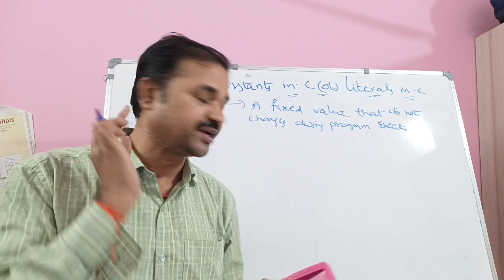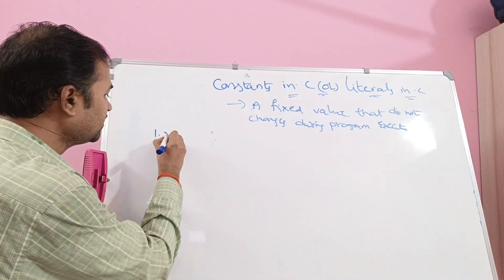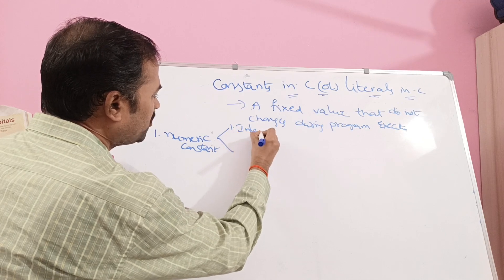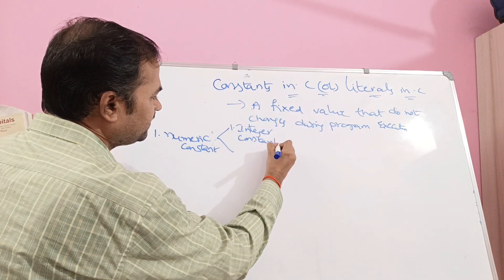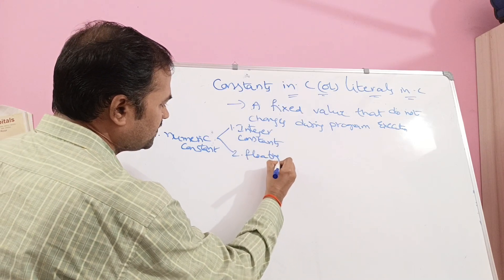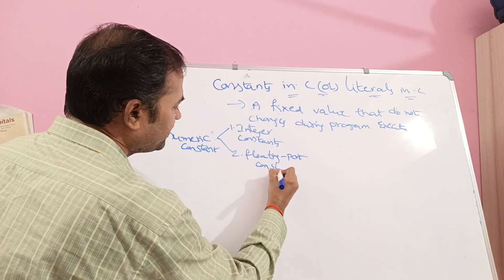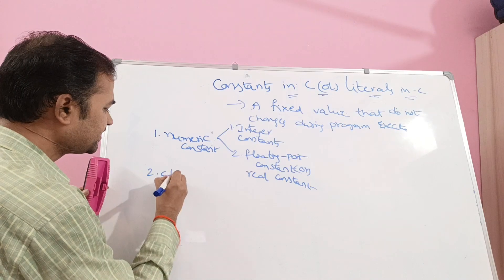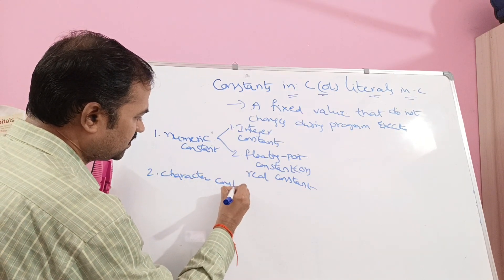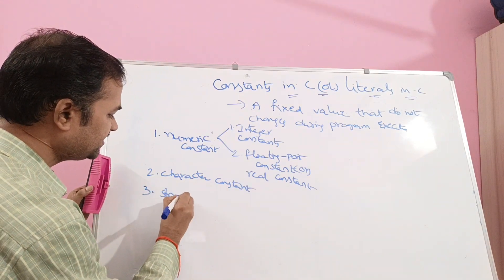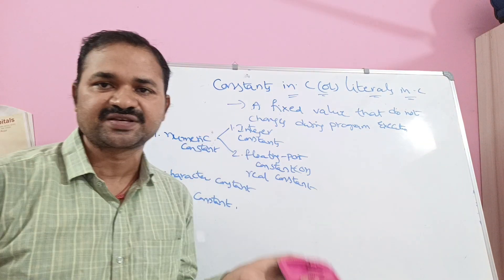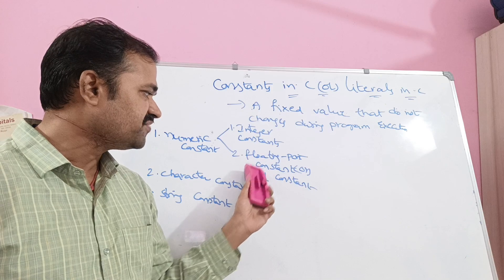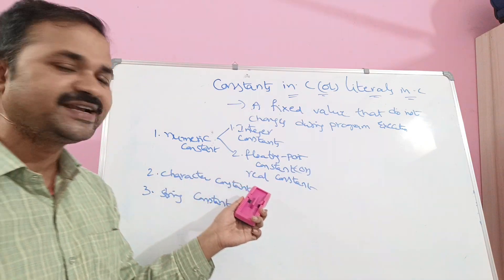We have three types of constants. First one is numeric constants. Constants are classified into three types: first one is numeric constants, second one is floating point constants or real constants, and third type is character constants.